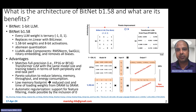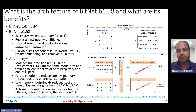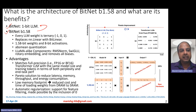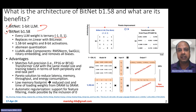What is the architecture of BitNet B1.58 and what are its benefits? BitNet 1.58 is very similar to the BitNet one-bit LLM, except that unlike BitNet, which does binary quantization, BitNet 1.58 does ternary quantization, which means it expresses every large language model weight using three different levels: minus one, zero, or one.